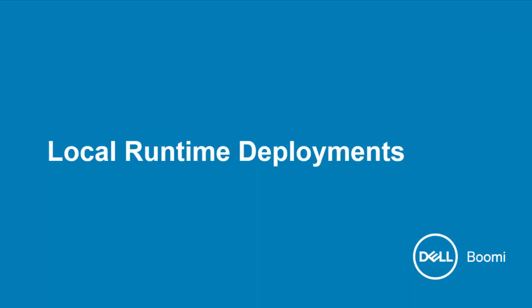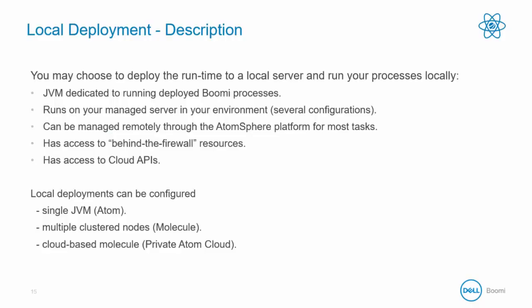Now let's look at a local runtime deployment. A local deployment is a JVM dedicated to running deployed Boomi processes. It runs on your managed server in your environment and can be configured by you. Most changes can be managed remotely through the AtomSphere platform, so there is no need to be on site to make changes. This is the big difference between cloud and local: the local deployment has access to local resources where the cloud cannot reach, and yet the local does not sacrifice any functionality because it can also connect to any cloud endpoint.